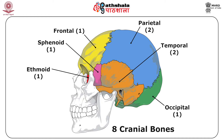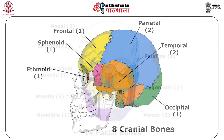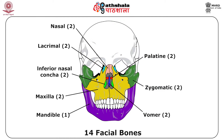The cranium's eight bones are: one frontal, two parietals, two temporals, one ethmoid, one sphenoid, and one occipital. The 14 facial bones are: two nasals, two maxillae, two lacrimals, two zygomatics, two palatines, two inferior nasal conchae, one vomer, and one mandible — the jaw bone.